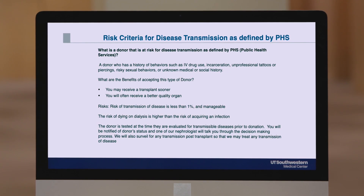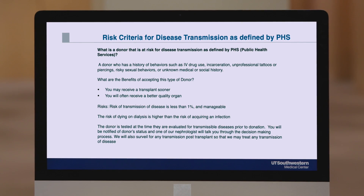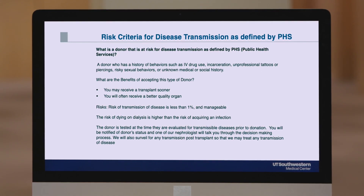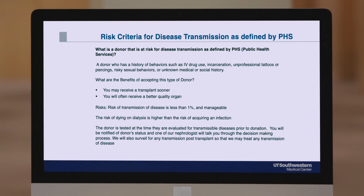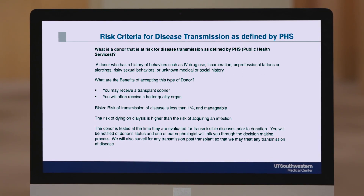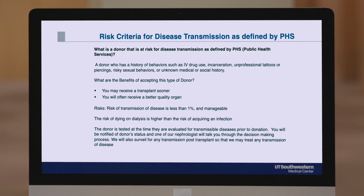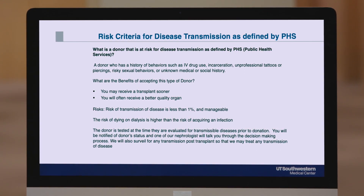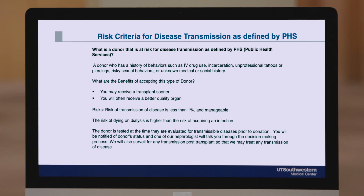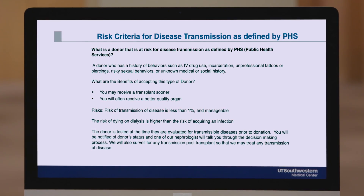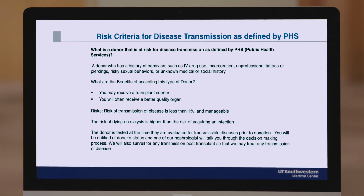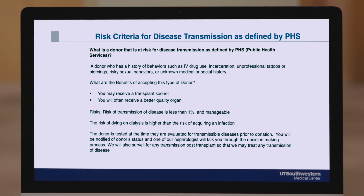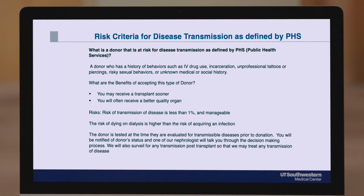The second type of kidney donor we'll discuss is a donor that has risk criteria for disease transmission according to the public health services, more commonly known as PHS. This is a donor who has a history of behaviors such as IV drug use, recent incarceration, unprofessional tattoos or piercings, sexual behaviors, or unknown medical or social history at the time of their death. This is based on the donor's social history obtained from the patient's family and not based on any obtained lab results.